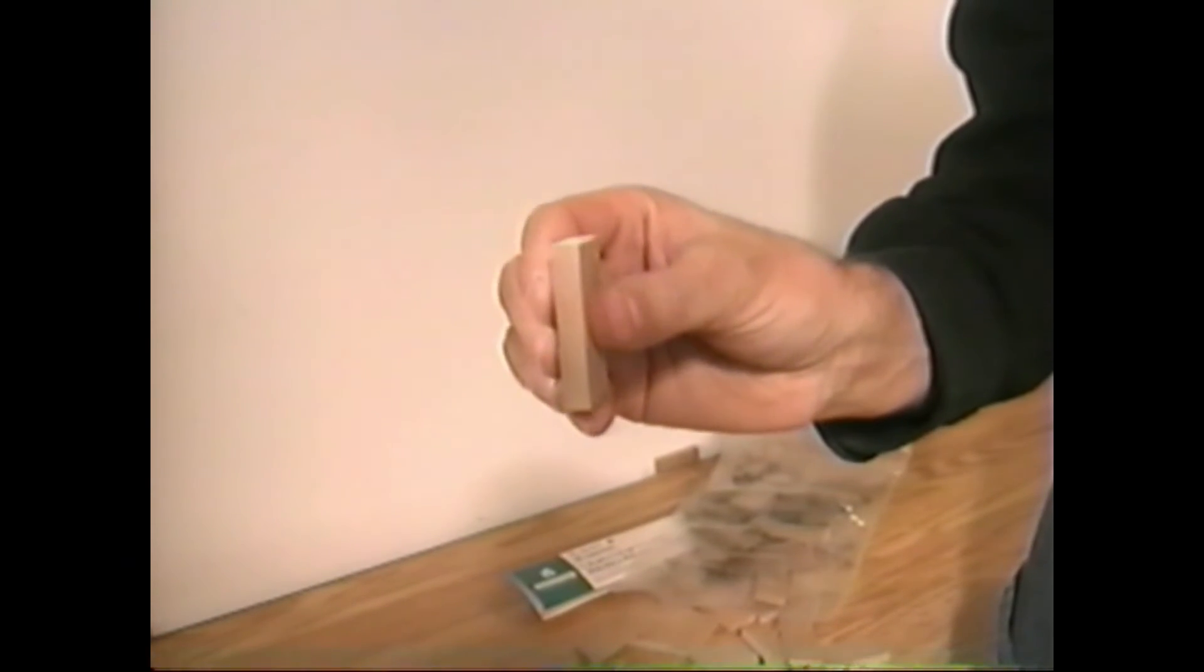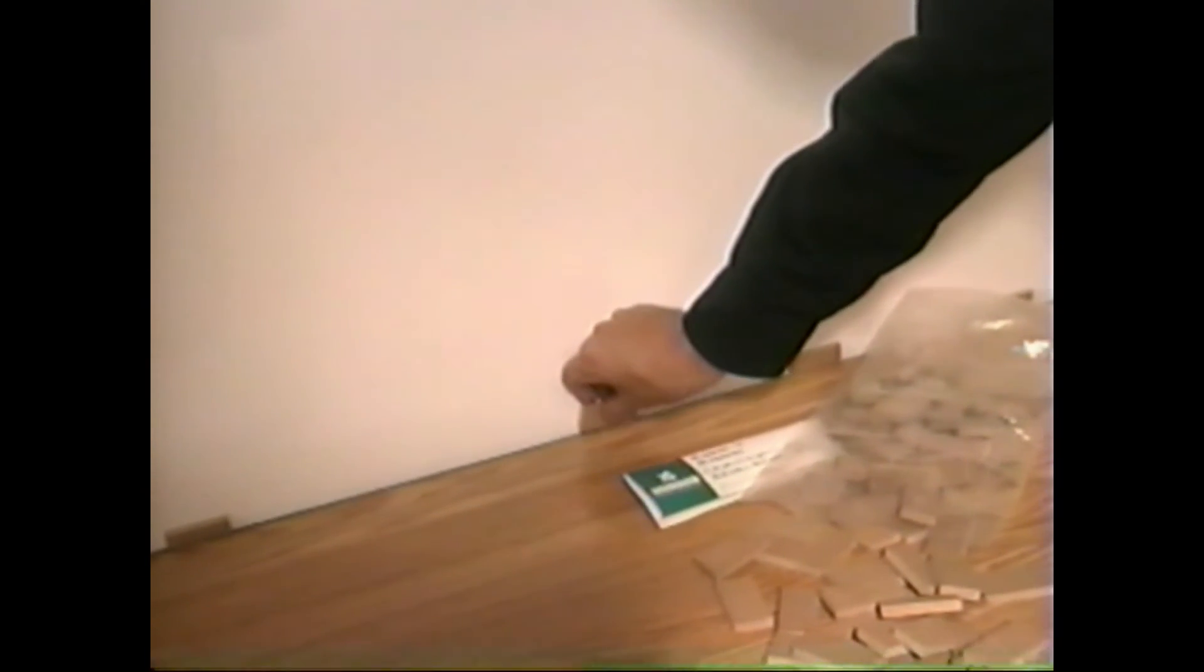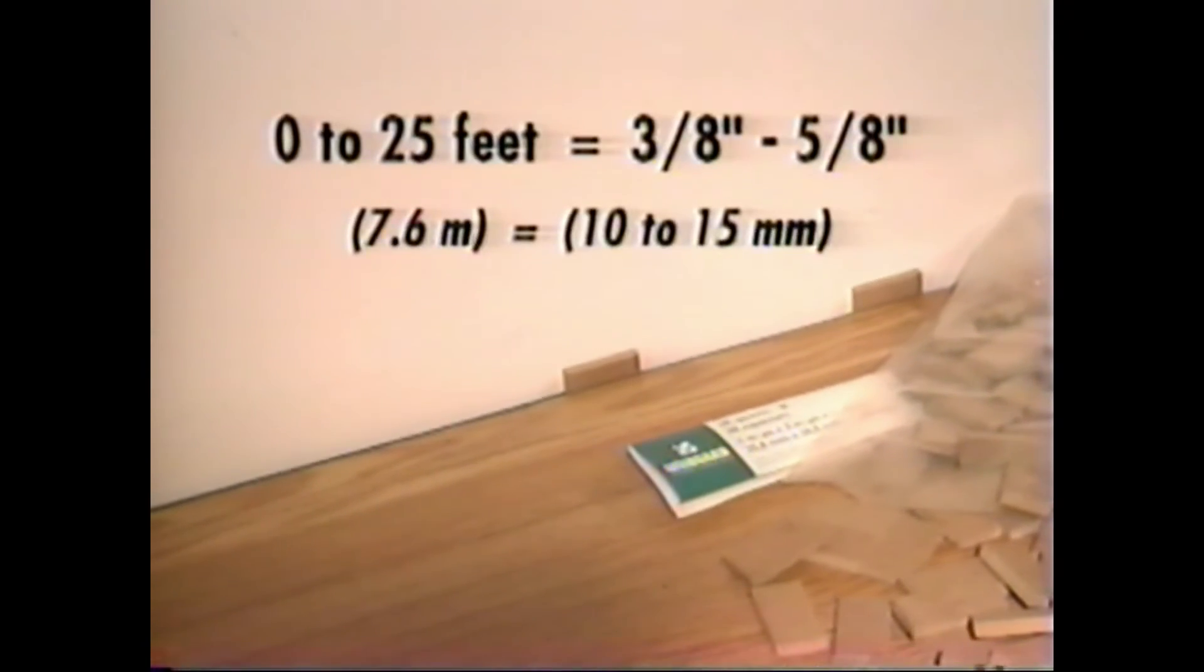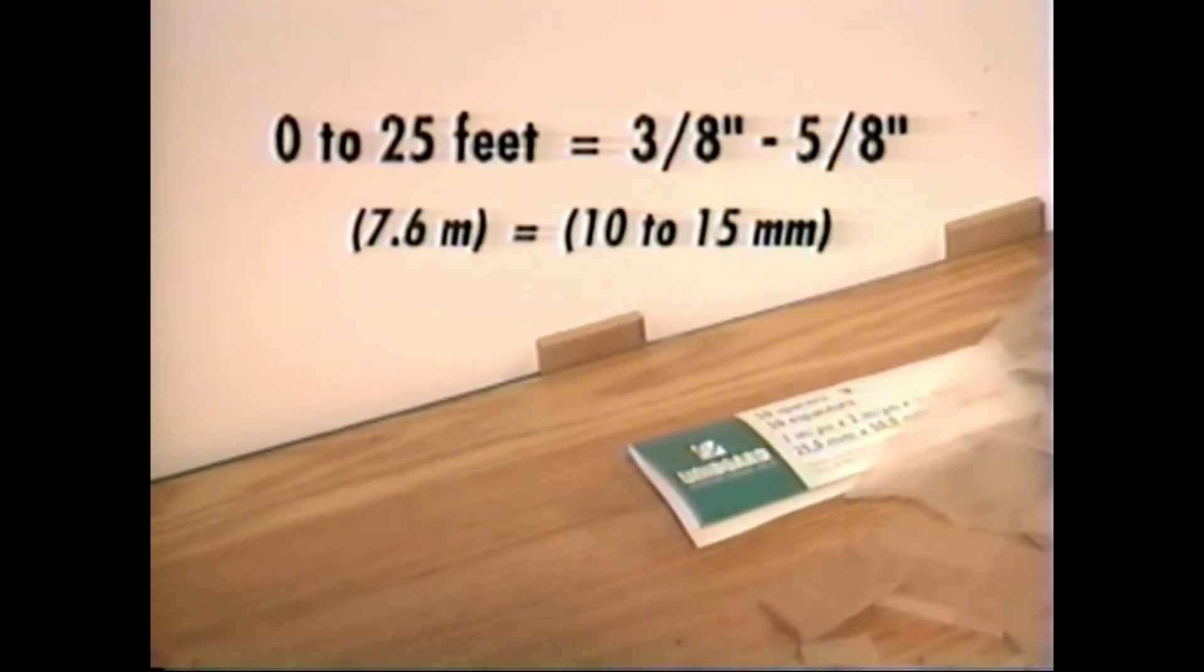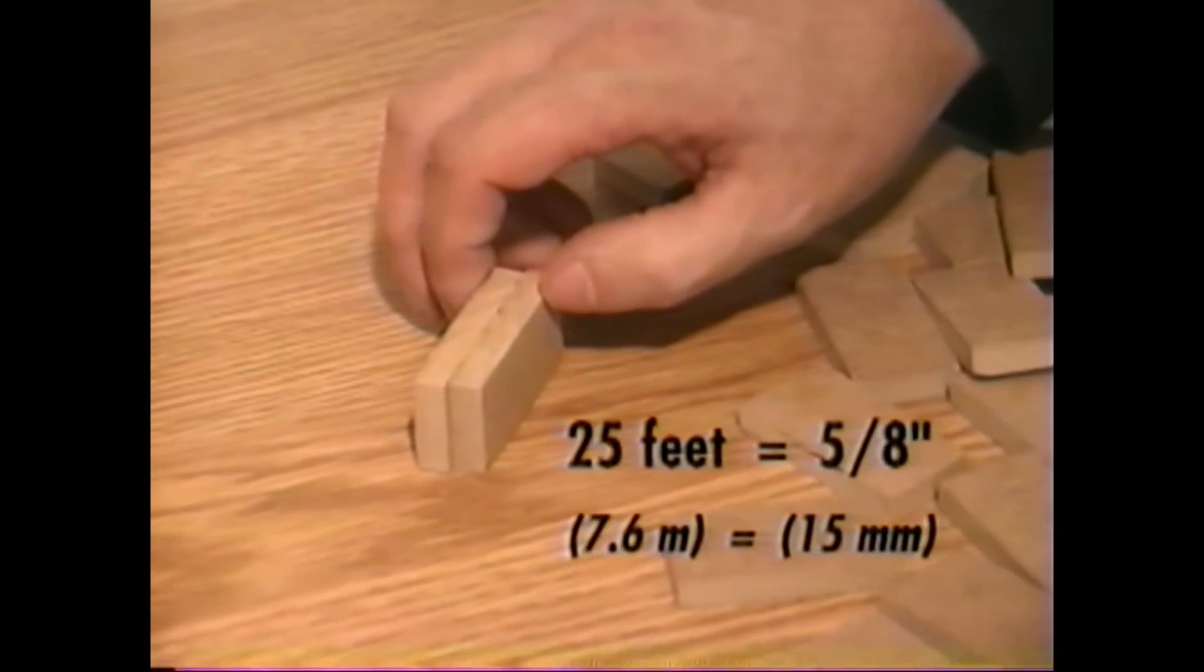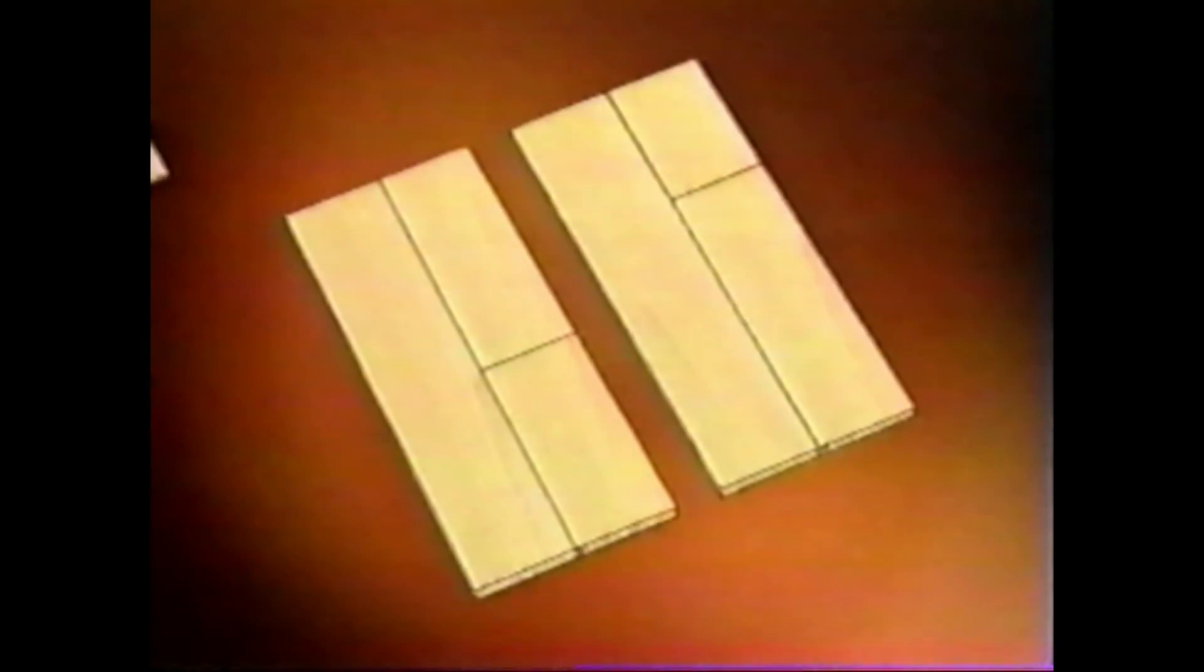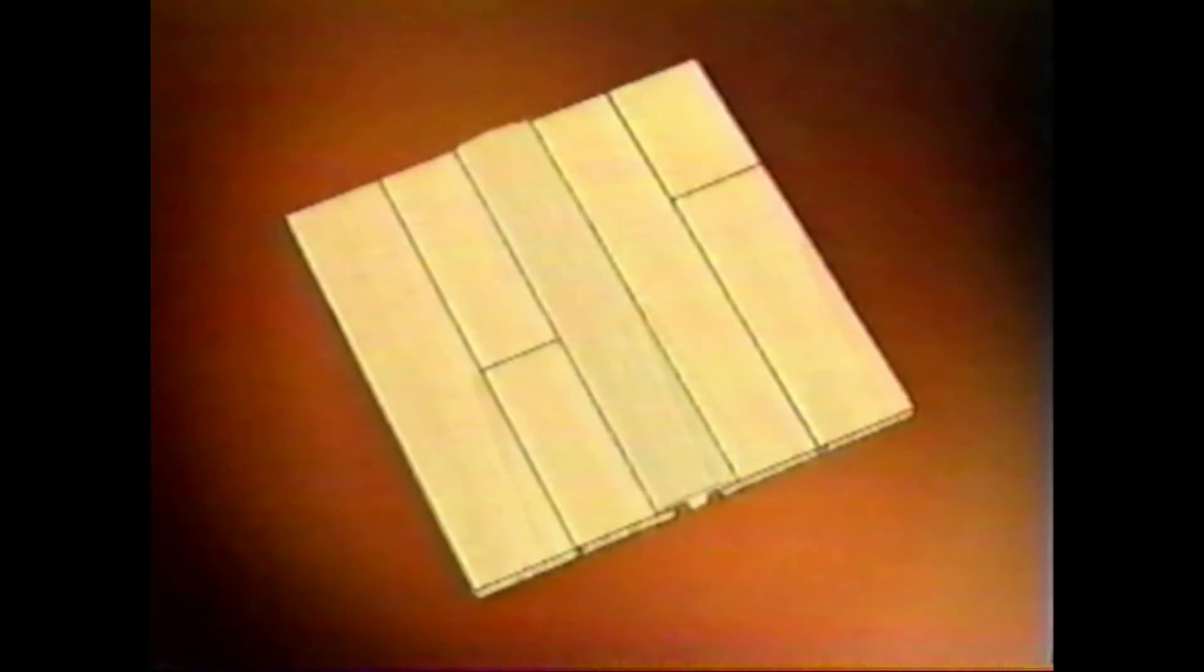Always leave an expansion gap around the perimeter of the room as well as against all fixed objects. The minimum required gap for rooms of less than 25 feet is 3 eighths of an inch to 5 eighths of an inch. The minimum required gap for rooms larger than 25 feet is 5 eighths of an inch. Longer or wider than 33 feet will require a T-moulding.